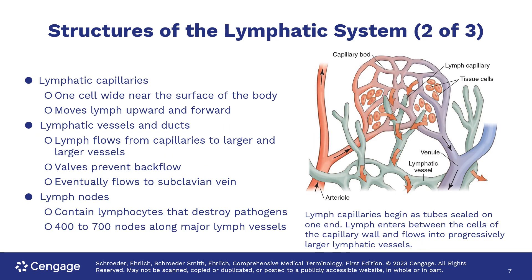The lymphatic system is made up of lymphatic capillaries, lymphatic vessels, and ducts and lymph nodes. The capillaries are one cell in width and are near the surface of the body. They move the lymph upward and forward. The fluid flows from the capillaries to the vessels that become larger as they get closer to the subclavian vein.